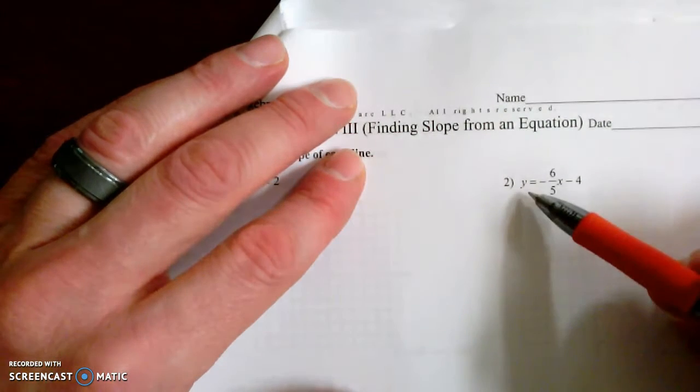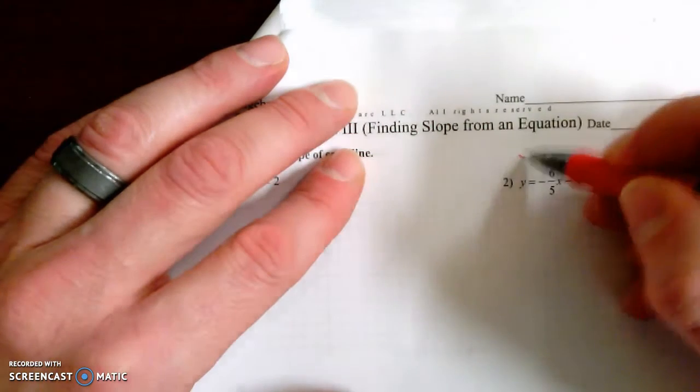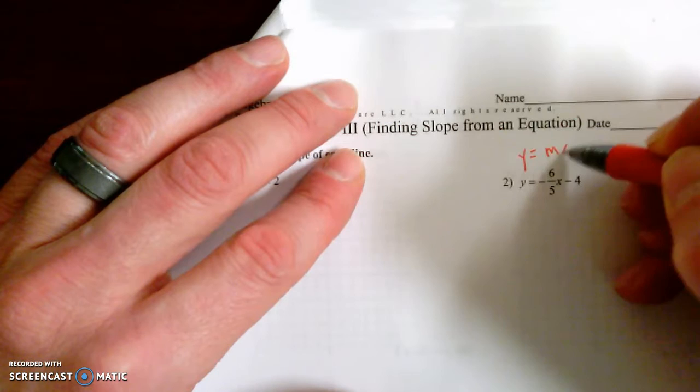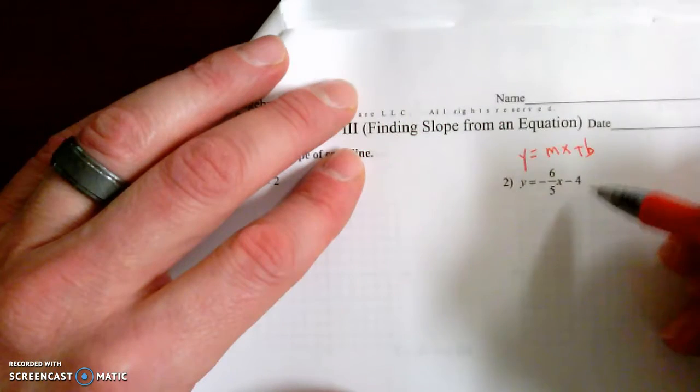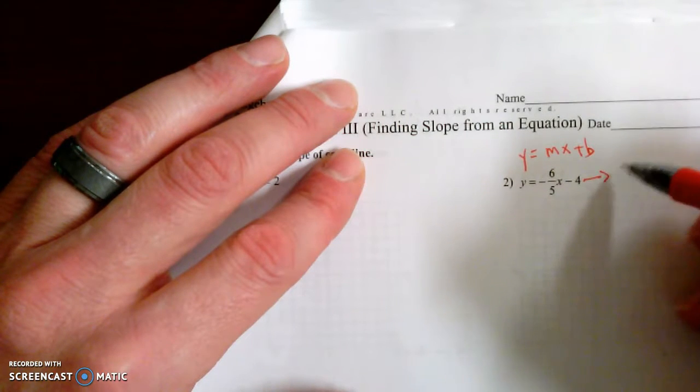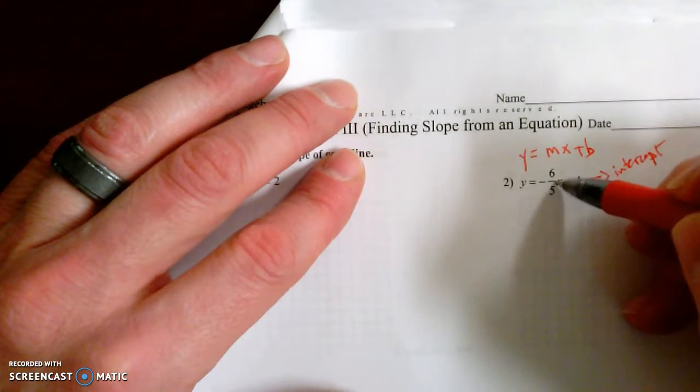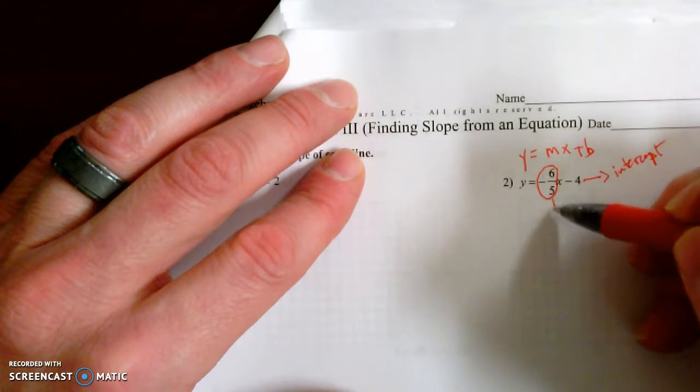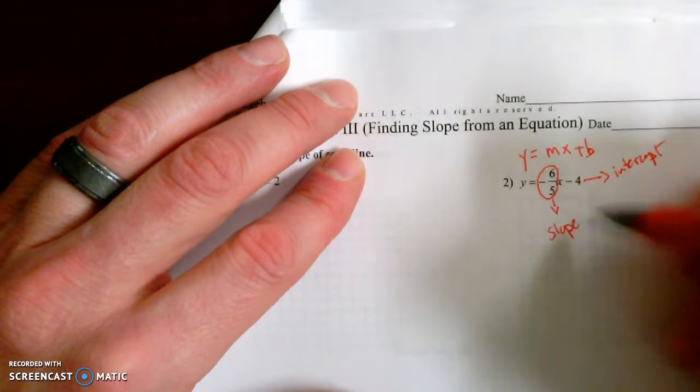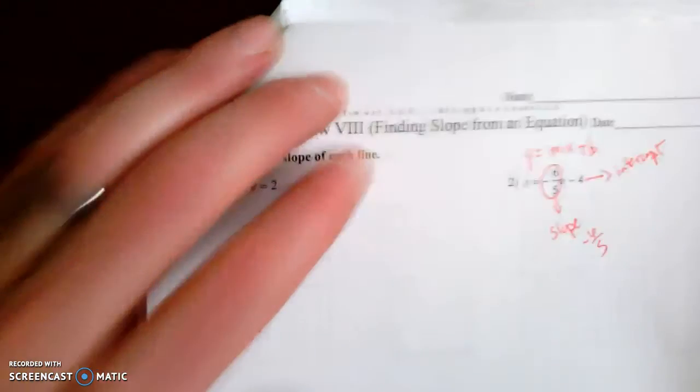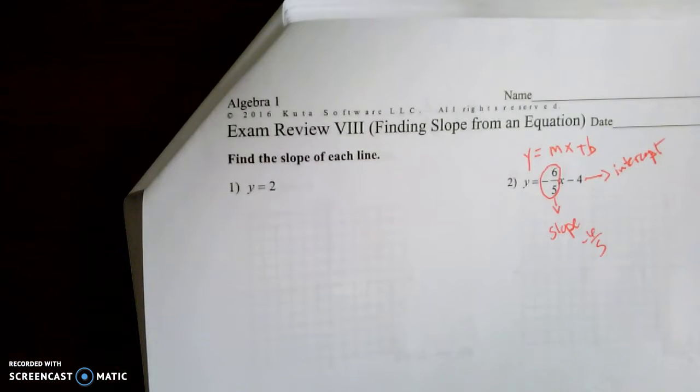...the slope-intercept form means that the y is isolated. It's in this form y equals mx plus b, where the b, in this case 4, is your y-intercept. And this number right here, the coefficient of x, is the slope, which is 6 fifths. So you're just copying down whatever the coefficient of x is as your slope. Super easy.